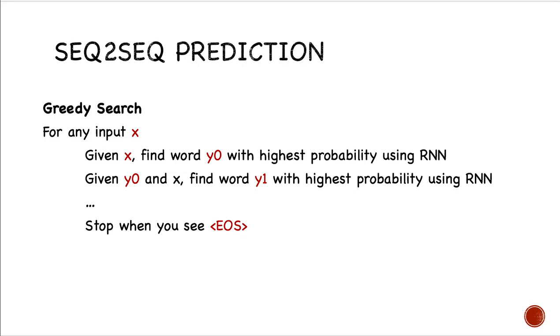Given y0 and x, we find the word y1 with highest probability using RNN. And then we stop when we see the end-of-sentence token.